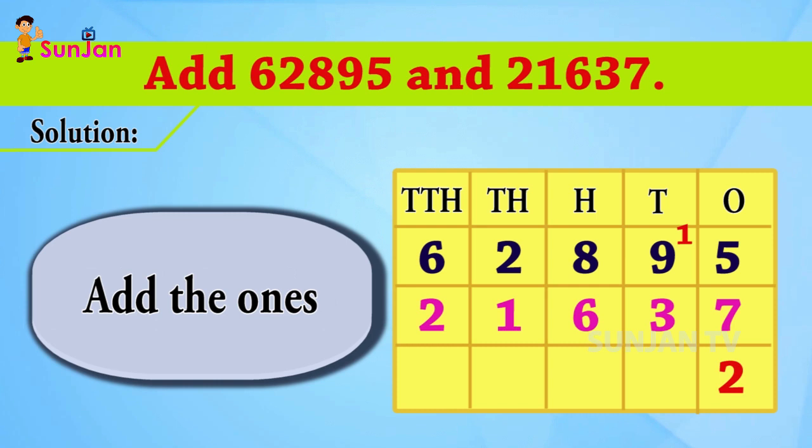Add 5 plus 7, that is 12. Write 2 down and 1 on top of 9. 9 plus 3 is 12, plus 1 is 13. Write 3 below and write 1 on top of 8.